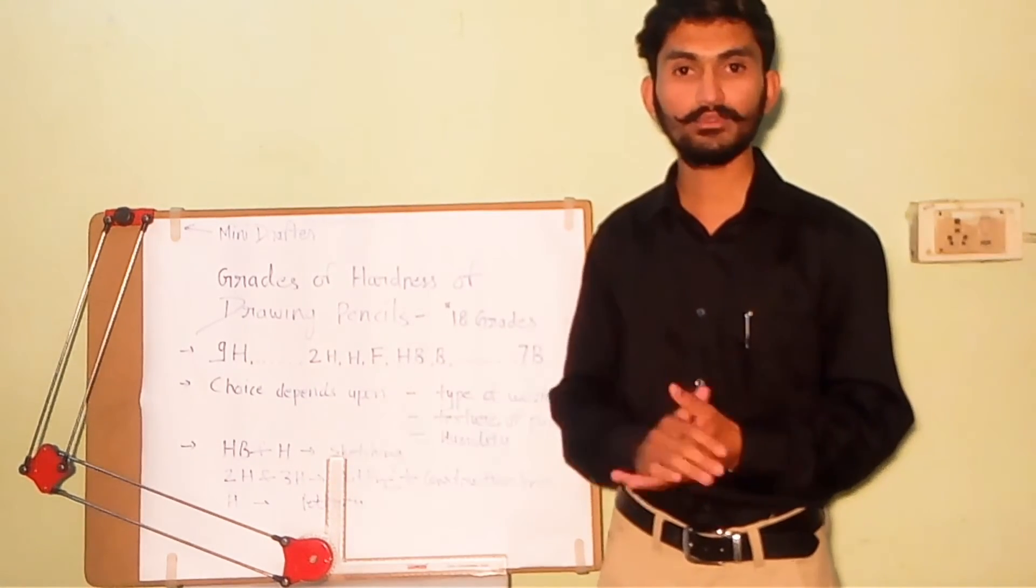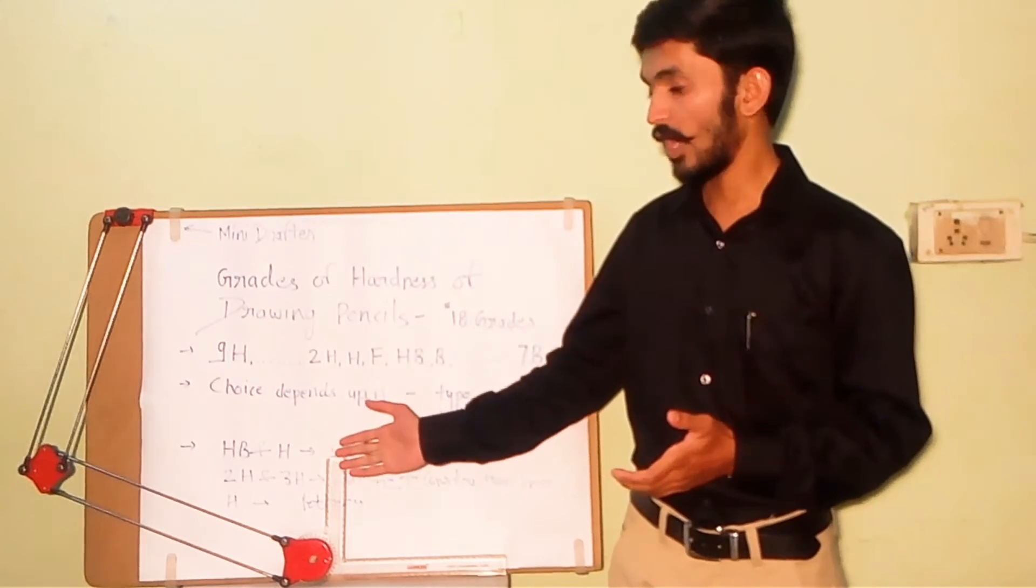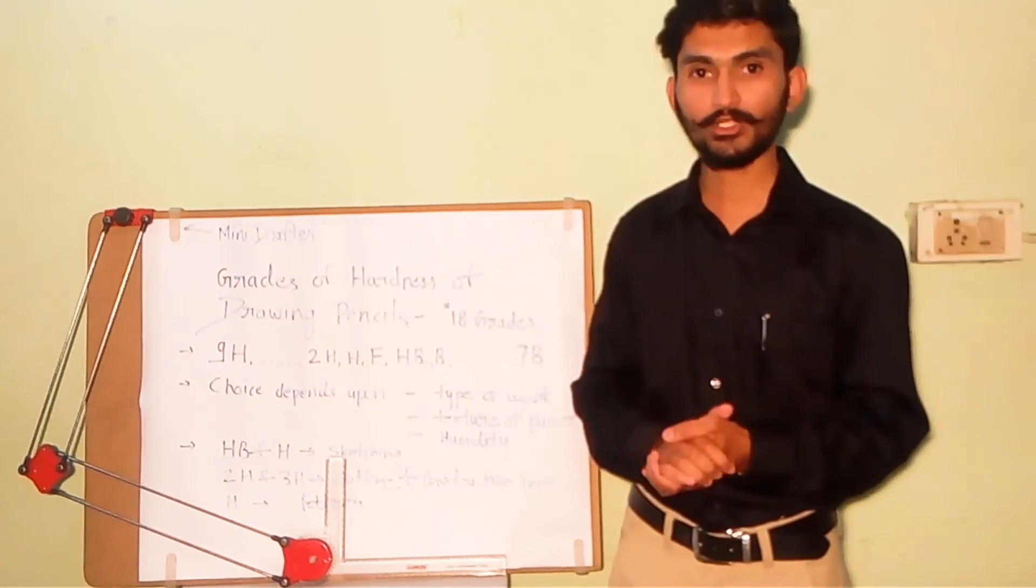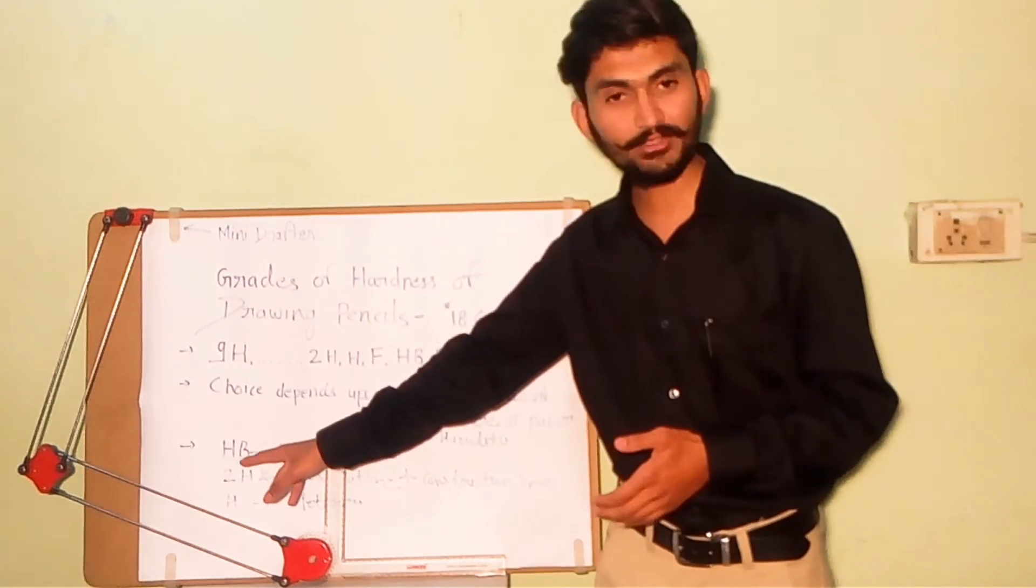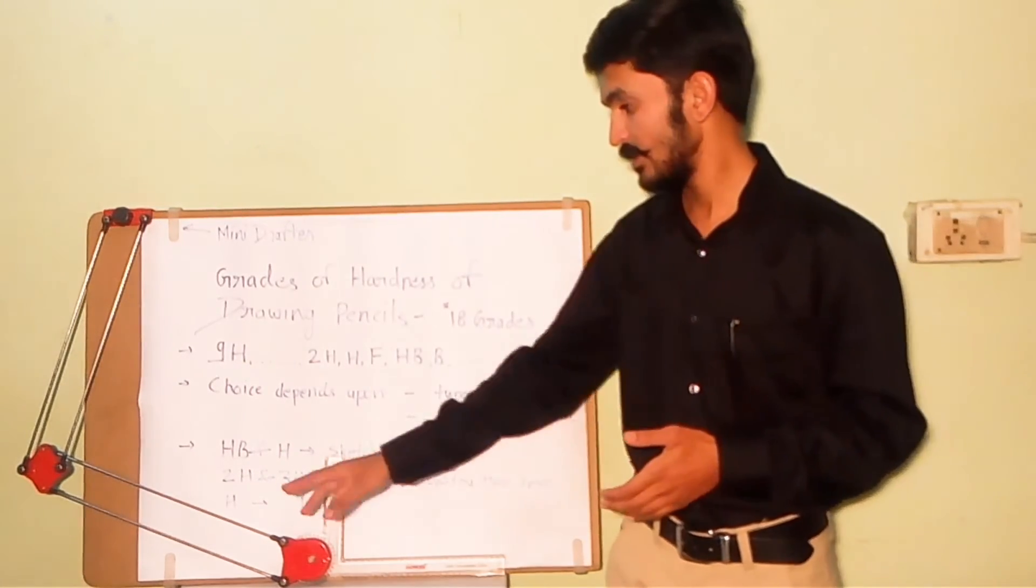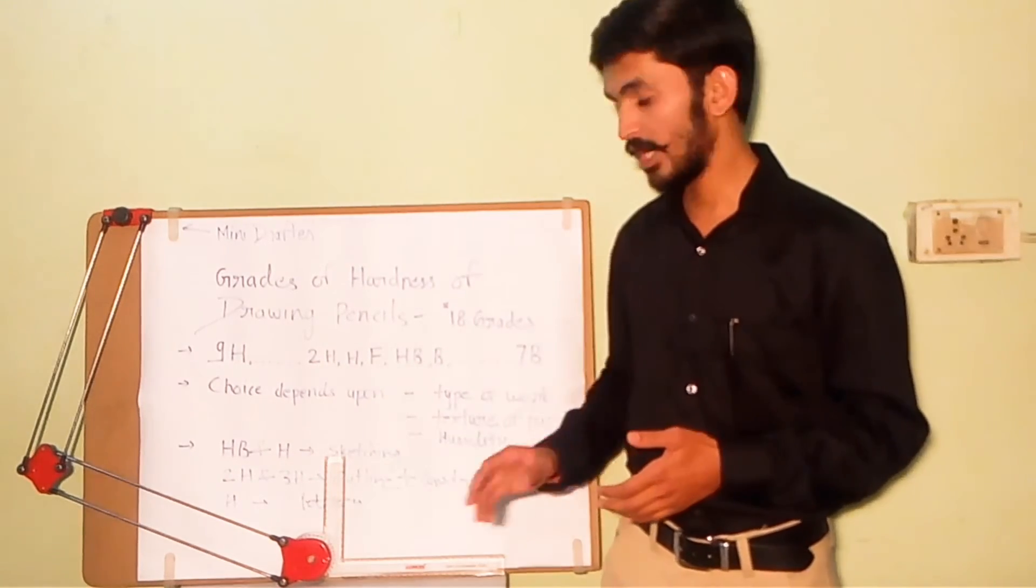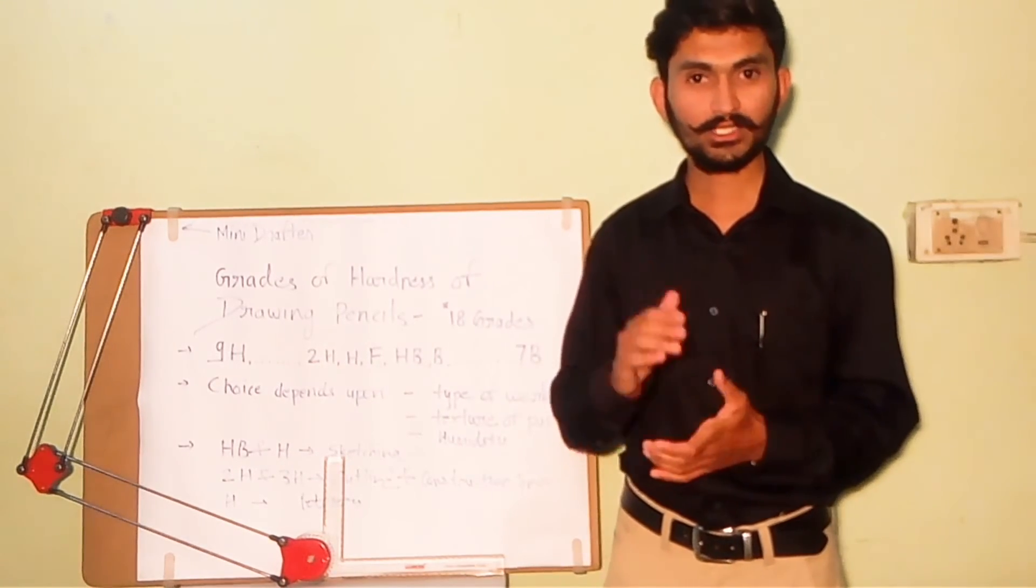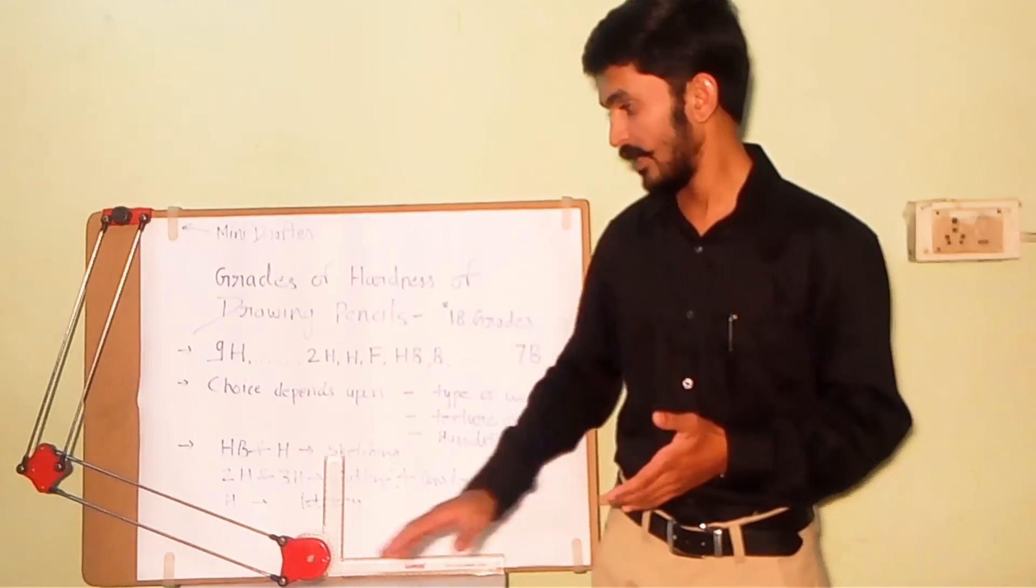Generally, these three or four types of drawing pencils are used in engineering drawing. HB and H are used for sketching purposes. 2H and 3H are used for outline construction lines and center lines. And H is used for lettering and providing information on the drawing sheet.